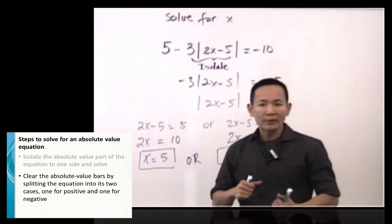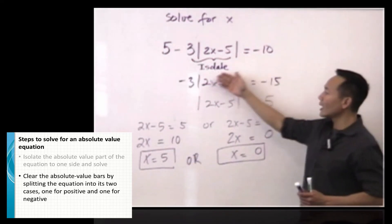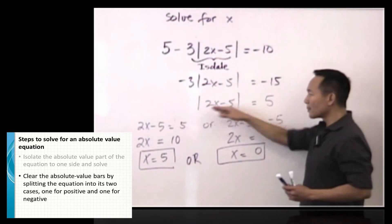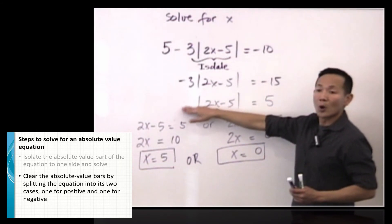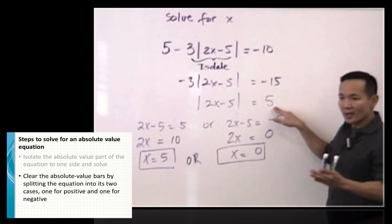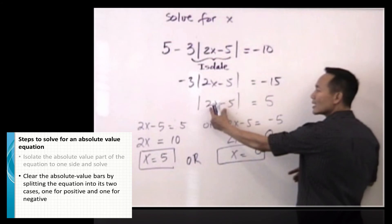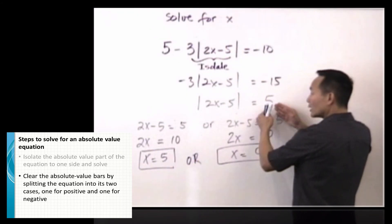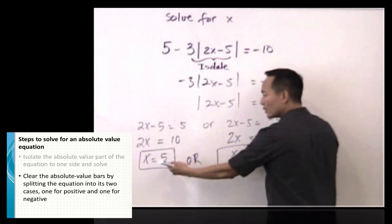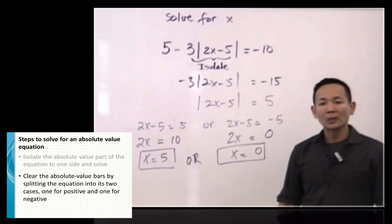One more time — the rule of thumb for solving an absolute value equation. We have to make sure we isolate the absolute value quantity by itself, with one coefficient. Then we compare that with a positive number. We set the expression equal to that number, or the expression equal to the negative of that number, and then work it out to solve for the unknown. That is how to solve for an absolute value equation.